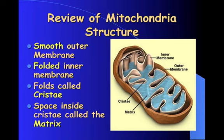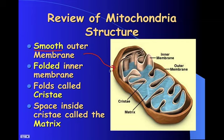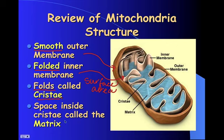Let's review the structure of a mitochondria. It has a very smooth outer layer and a folded inner membrane. The reason for the folds is to increase surface area. These folds are called cristae, and the space inside the cristae is called the matrix.